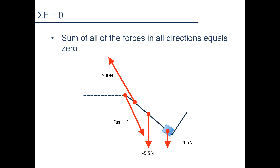The next step in the static analysis is to analyze the forces acting on the object. As stated earlier, we assume that the sum of all forces equals zero in static analysis. Here, we will break down each force into two components: a component that is parallel to the object or the leg, and a component that is perpendicular to the leg.